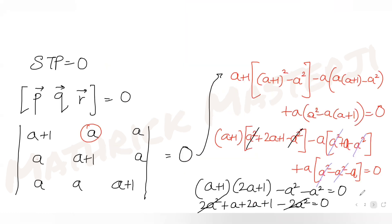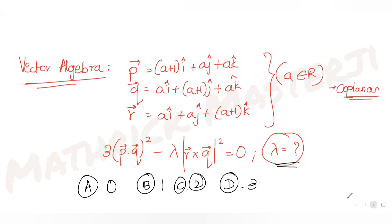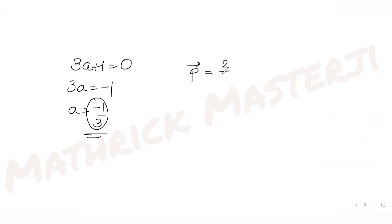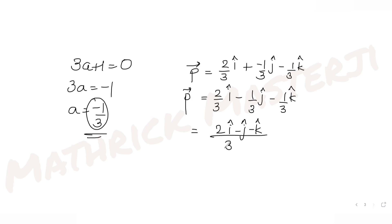Substituting a = −1/3 into the vectors: vector p has (a+1) with i, so (−1/3 + 1) = 2/3 for the i component, and −1/3 for both j and k. So p = (2i − j − k)/3.